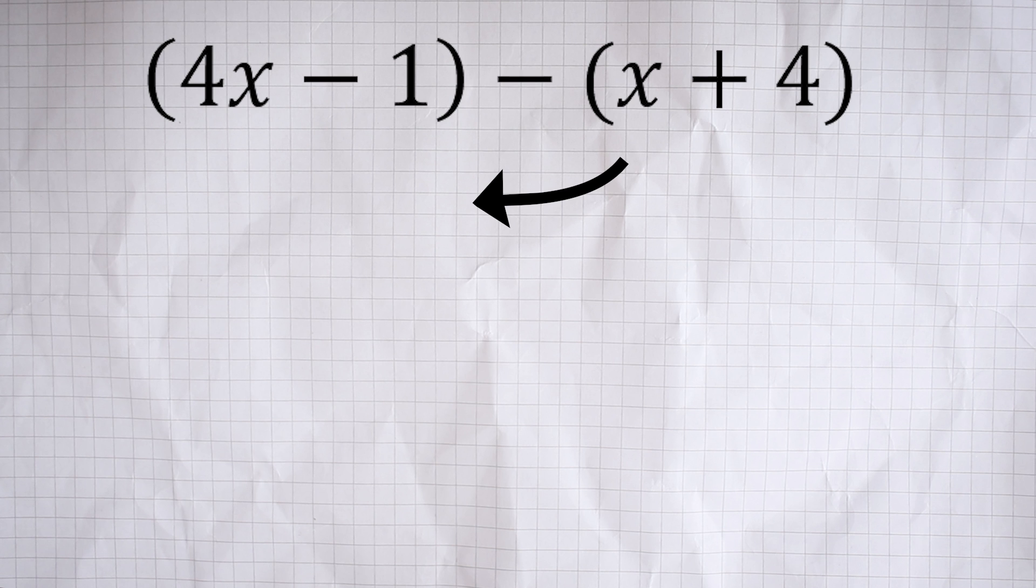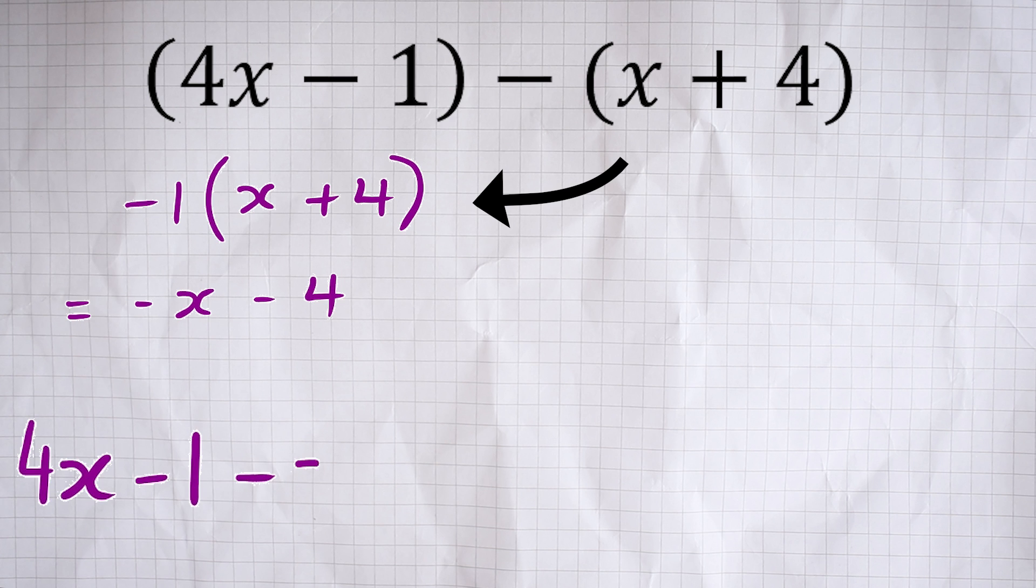You might find it useful to expand that bracket first. And to do that, I would think of it as having a 1 outside. Actually, it's negative 1, isn't it? So we're going to do negative 1 times x, which is negative x, and we're going to do negative 1 times 4, which is negative 4. So we end up with 4x minus 1 minus x minus 4.